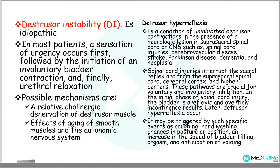There are two possible mechanisms for this: one is a relative cholinergic denervation of the detrusor or the bladder muscles, and the second mechanism is either the effects of aging on the smooth muscles and the autonomic nervous system. Detrusor hyperreflexia, on the other hand, is a condition of uninhibited detrusor contraction in the presence of a neurologic problem in the suprasacral spinal cord or the central nervous system.